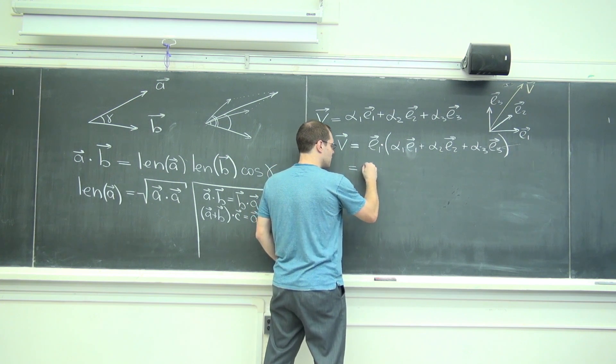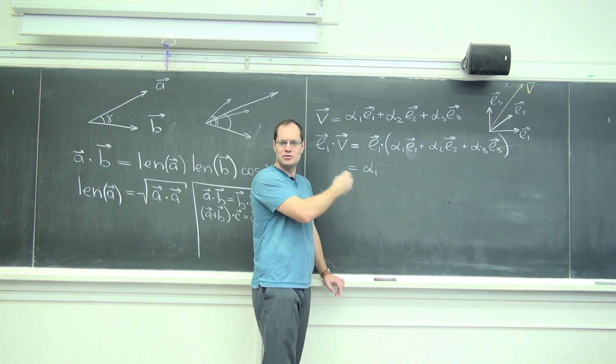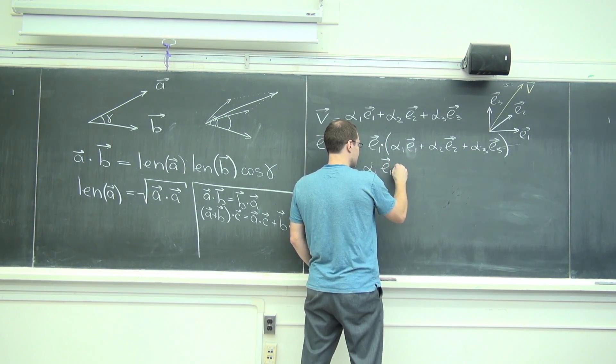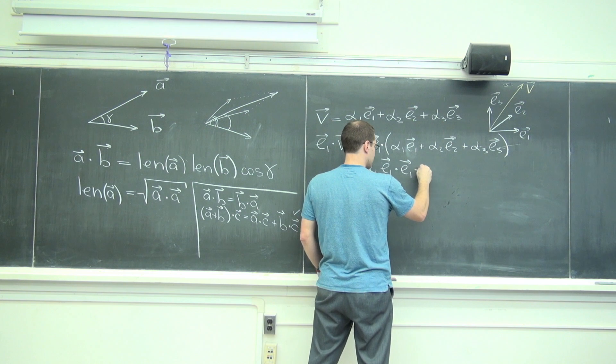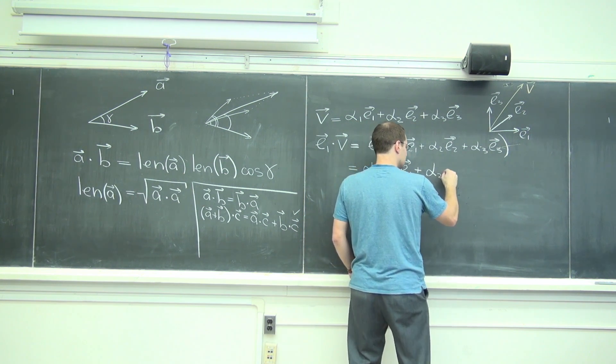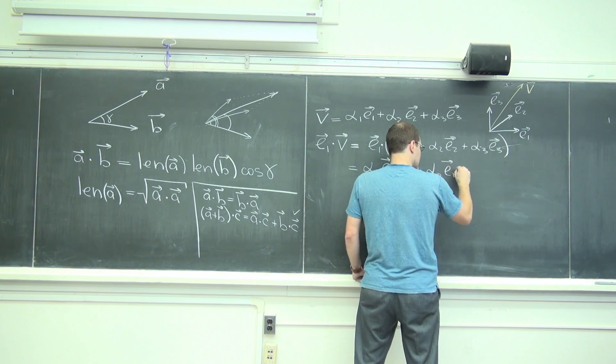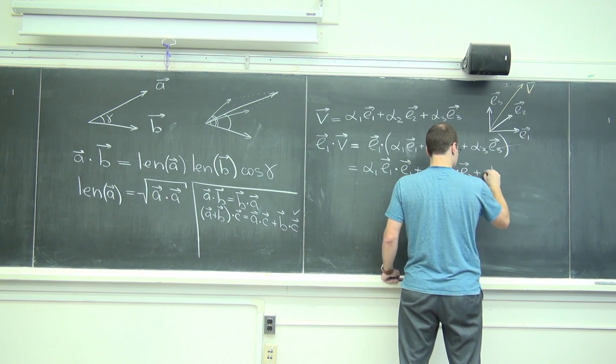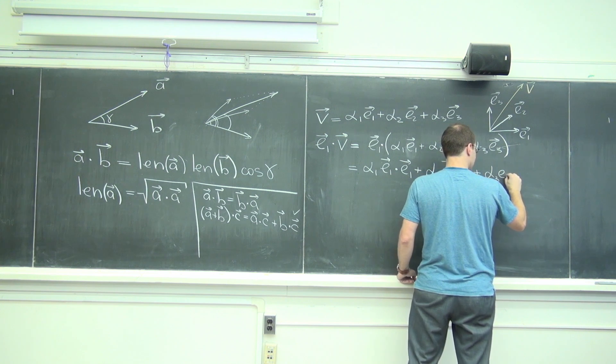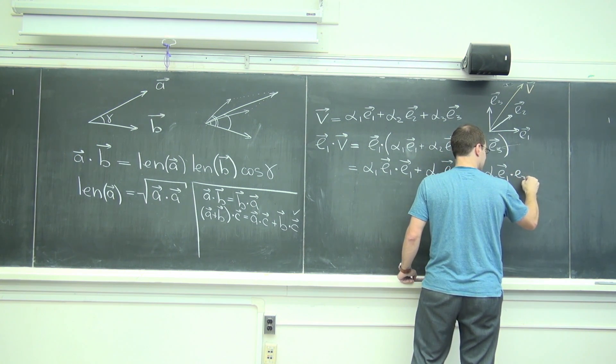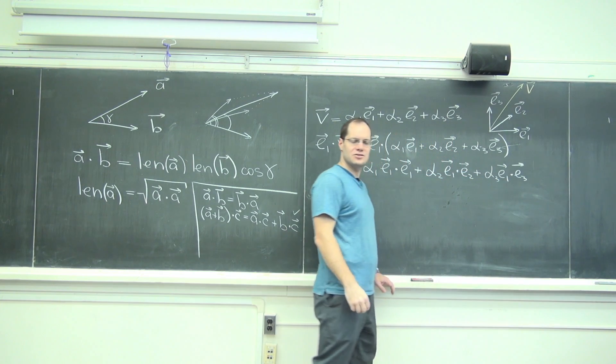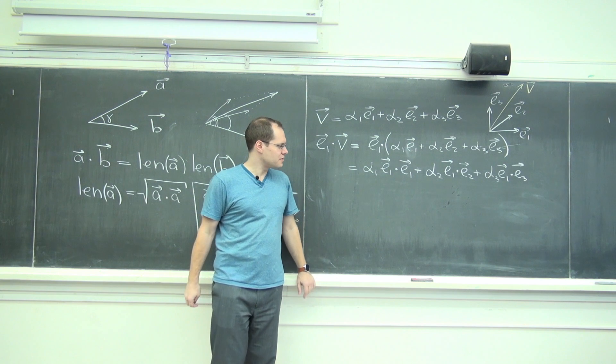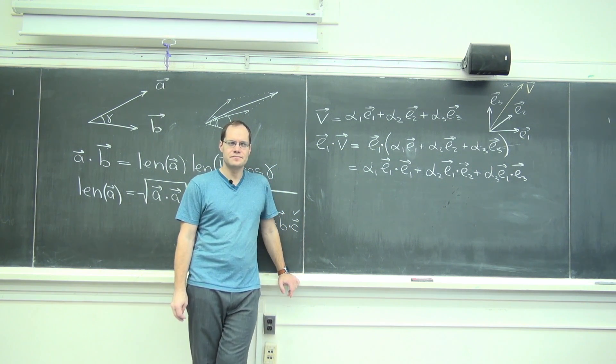So I will have alpha 1, I can take the constant out, E1 dotted with E1 plus alpha 2 E1 dotted with E2 plus alpha 3 E1 dotted with E3. I just used the distributive law which I have just derived properly.